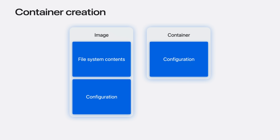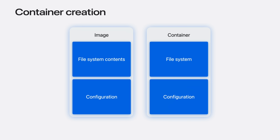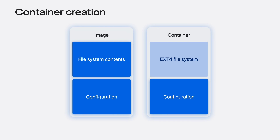Once an image exists locally, the image's configuration can be used as a starting point for a new container. Image configuration can contain the default process to execute, the working directory for where the process is run, as well as what user to run as. For performant access to the image's contents, we expose the file system as a block device. A block device consists of creating a large file and formatting it with a file system. For our Linux containers to consume this block device, it must be formatted with a file system that Linux can understand. Ext4 is a widely used Linux file system, and containerization provides a Swift package that allows you to format, create a directory structure, and populate an ext4 file system directly from Swift.